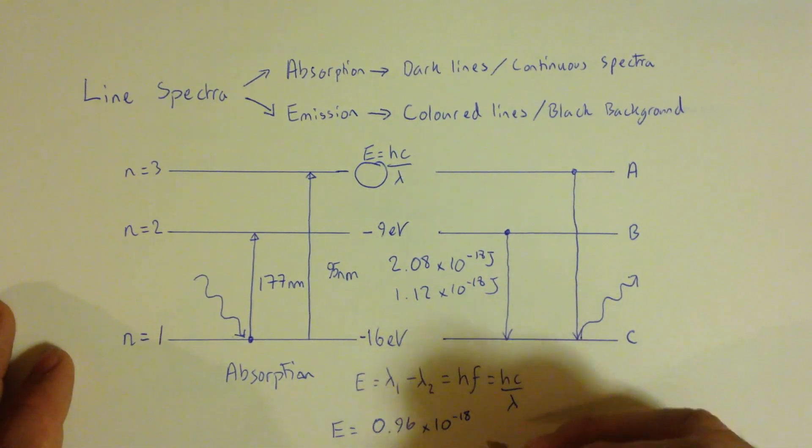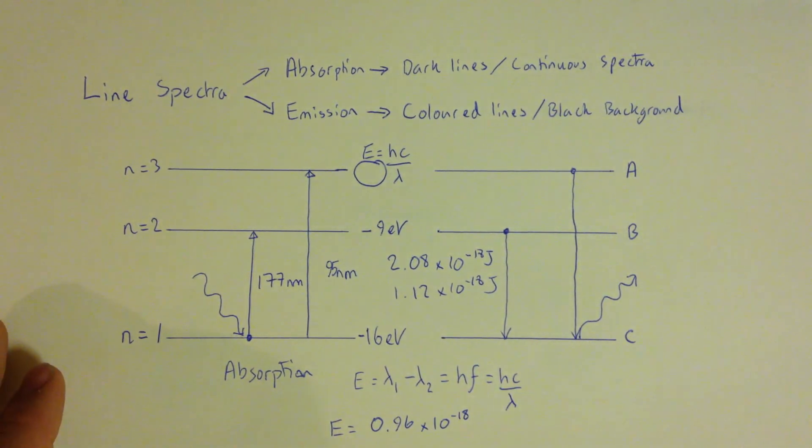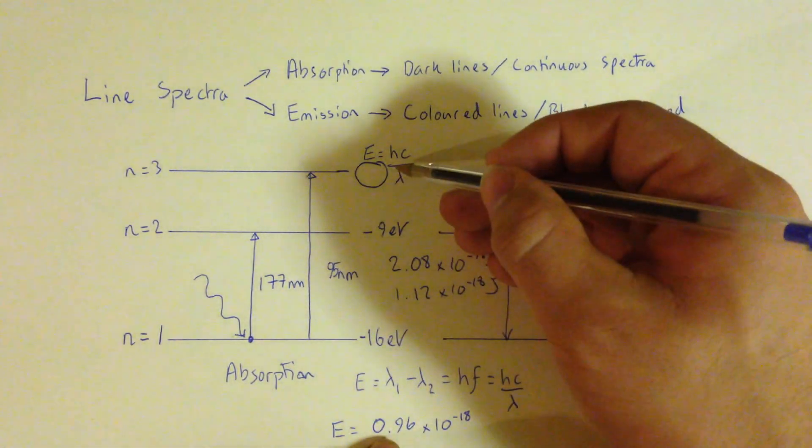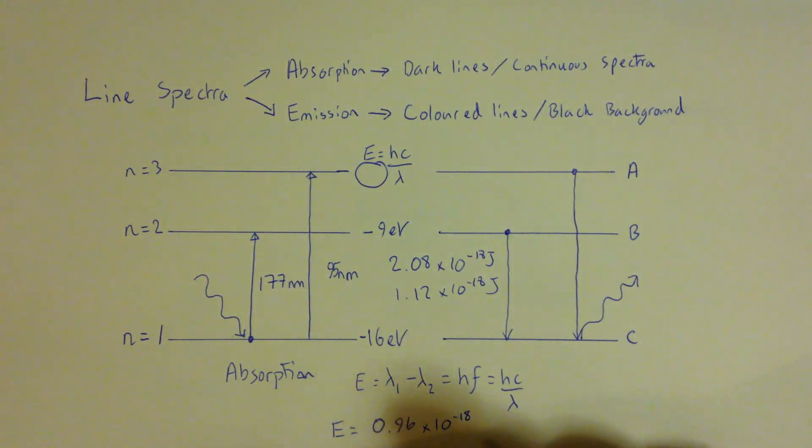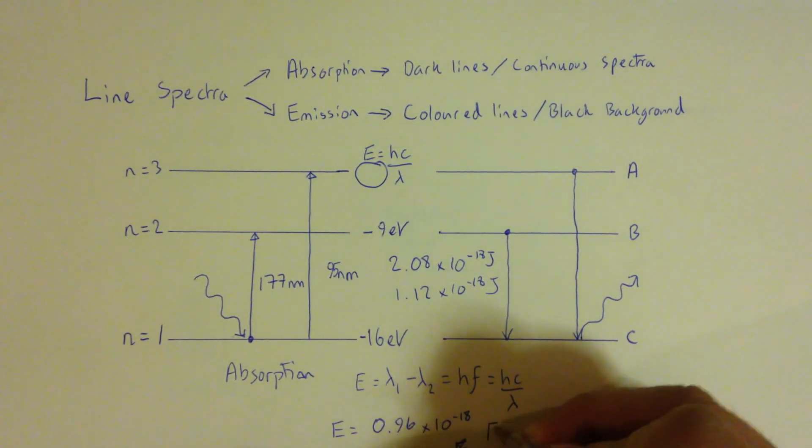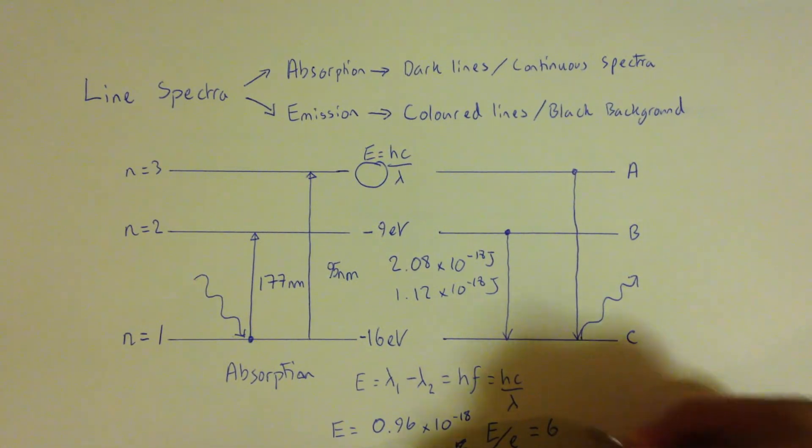So now that I've got my energy, I can rearrange my equation to give me a value for lambda, if that was what I wanted, or I could give it for frequency since I know the energy of that gap. All I'm interested in here though is knowing what electron volt that corresponds to. So if I divide this, if I divide this energy level E, if I divide E by the energy of an electron volt, which is 1.6 times 10 to the minus 19, then I will get an answer of 6.